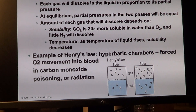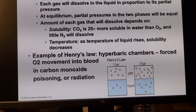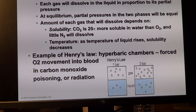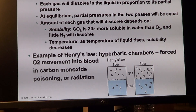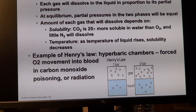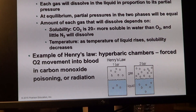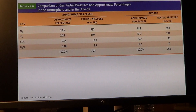Temperature also plays a role in solubility — warmer temperature increases solubility. Henry's Law is the solubility of gases. More soluble gases move to watery surfaces much faster. This also relates to hyperbaric chambers that force oxygen movement into the blood, and are used for carbon monoxide poisoning — because hemoglobin's affinity for carbon monoxide is incredibly higher compared to oxygen, it kicks oxygen out of the red blood cells.